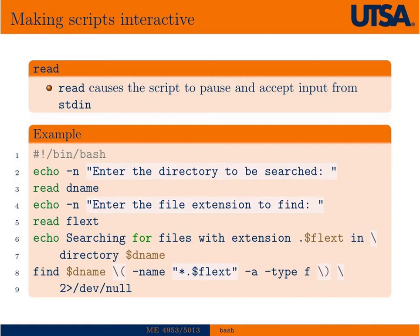So we can make scripts interactive with a read command. Here you see I have a script that I wrote. We start with a shebang line at the beginning. The first thing we do is we want to echo the directory needed to be searched. And then it'll pause and read in a variable called dename from standard in, from the input. Then once we hit enter from the input, it'll ask us the next question, enter the file extension to find. And then it'll pause and ask us for an entry there. And then it just echoes a message.